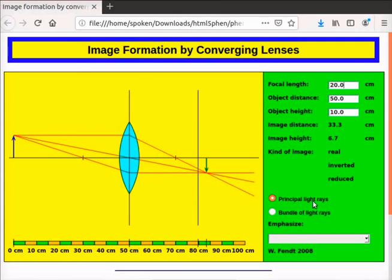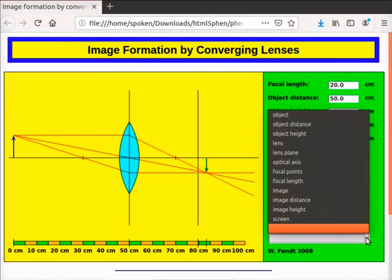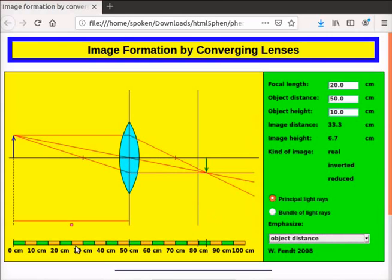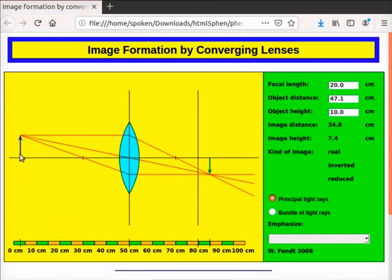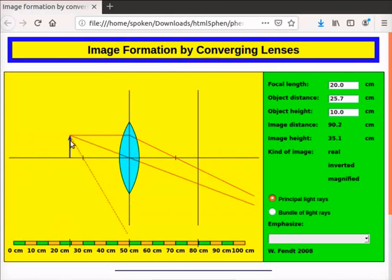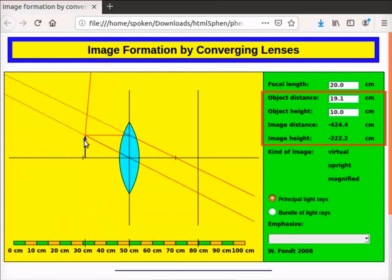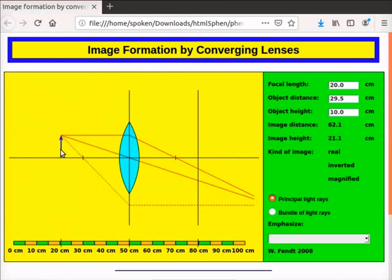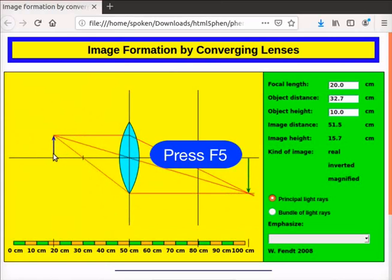By default, principal light rays option is selected. A drop-down is provided to emphasize different parameters. From the drop-down list, select object distance. Observe that the app emphasizes the object distance using a blinking line. The blinking line disappears after some time. We can also change the object distance by dragging the object. As we drag, the value in the text box changes accordingly.